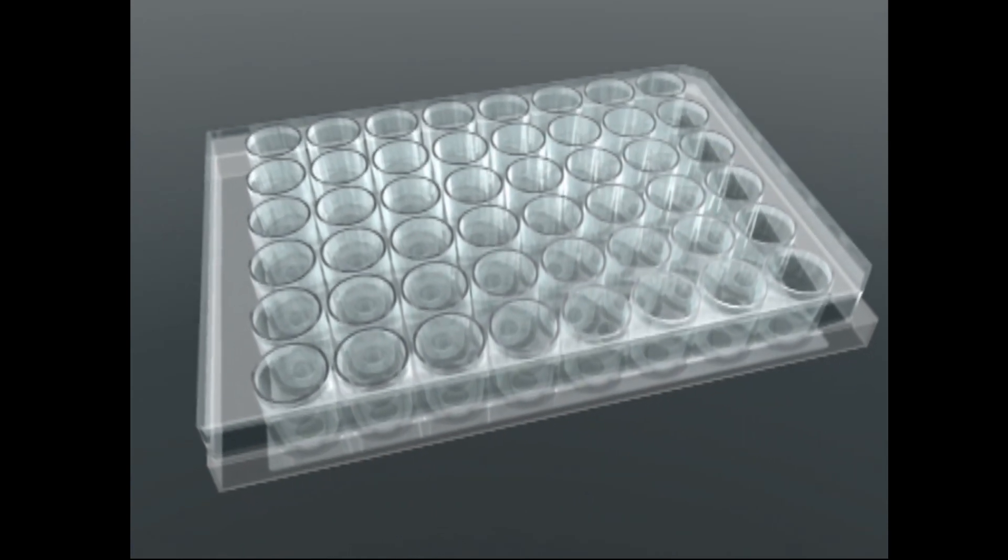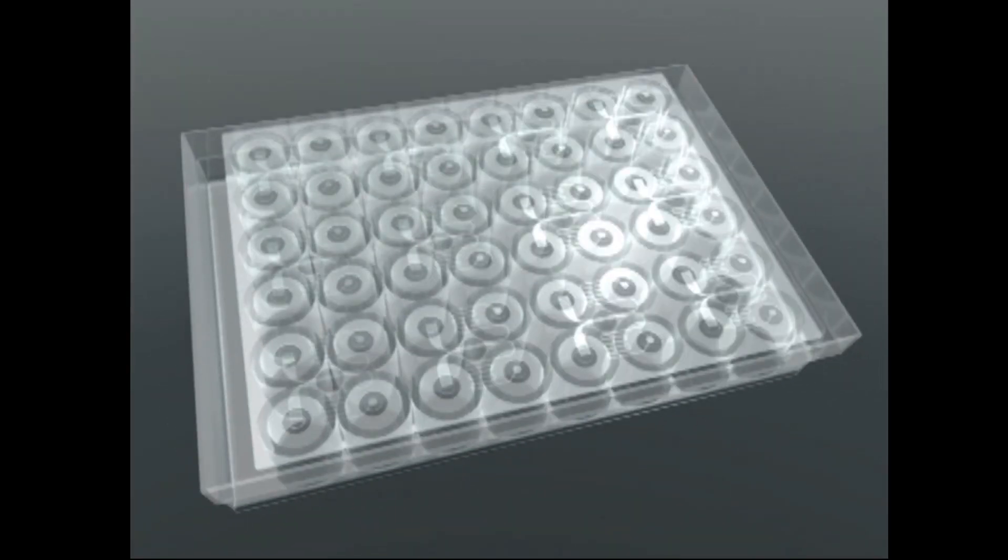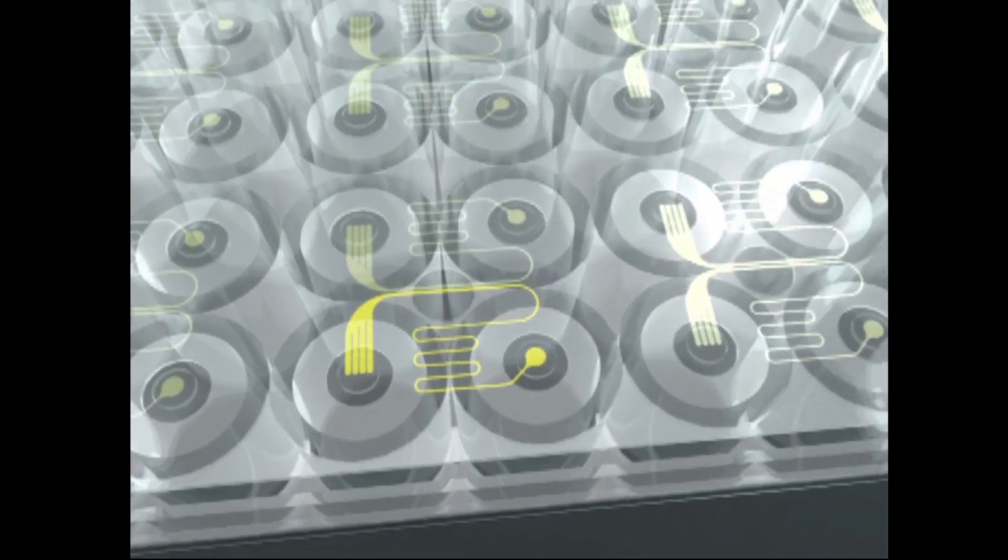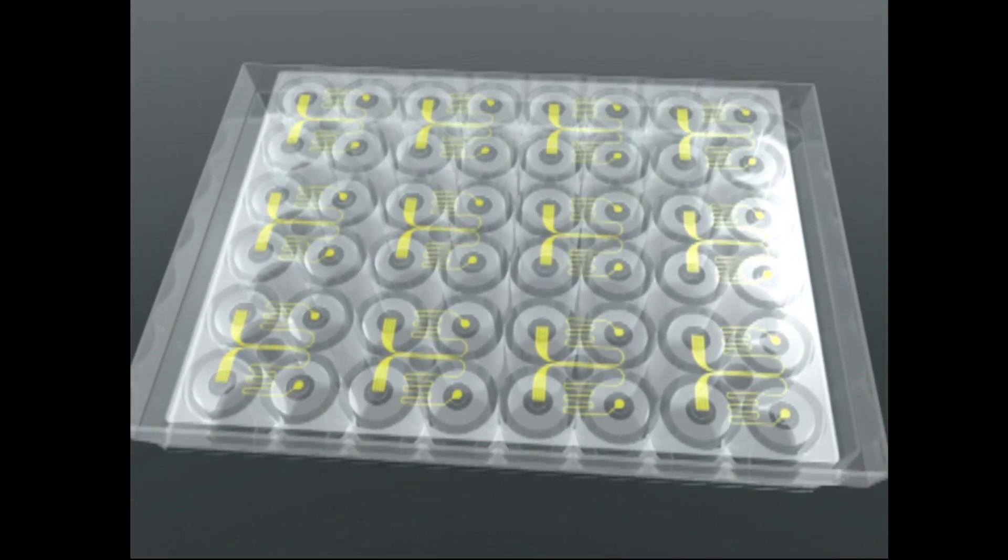Each plate contains an array of micron scale flow channels which run along the bottom of the plate. The wells of the plate serve as reservoirs for the reagents going into and out of the flow channels. Here we are showing the 48 well high shear plate. This plate contains 24 experimental flow channels each connecting to an input well and an output well.